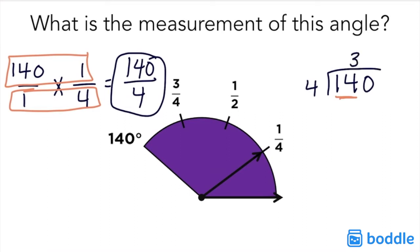I have 3 groups of 4, then I subtract 12 making my remainder 2, and then I bring down my final digit and ask myself how many groups of 4 can you make with 20.